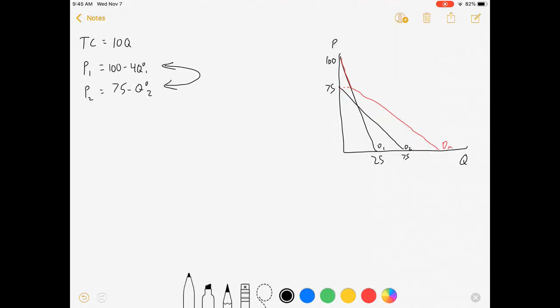So the monopolist has the choice of choosing marginal revenue equals marginal cost based on this equation or treating them separately and looking at both of these equations individually. If it's possible to segment the market into two different ones and maximize profit on both, that's where the firm is going to make the most money.